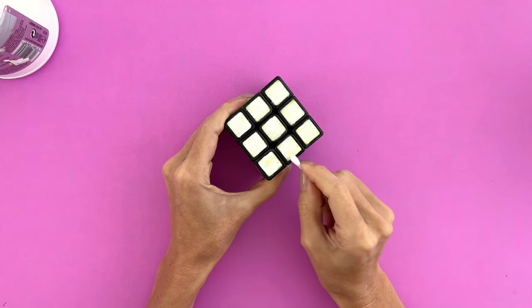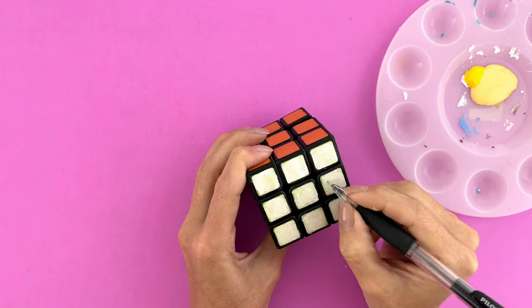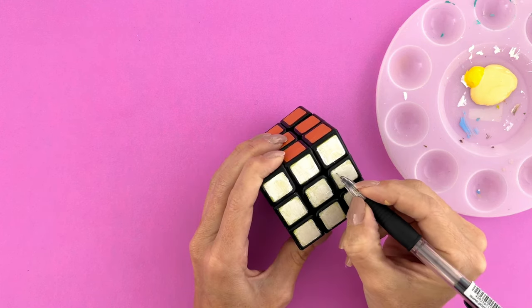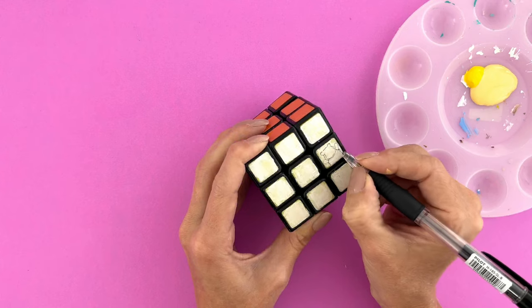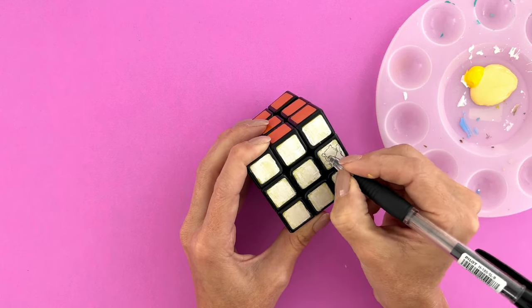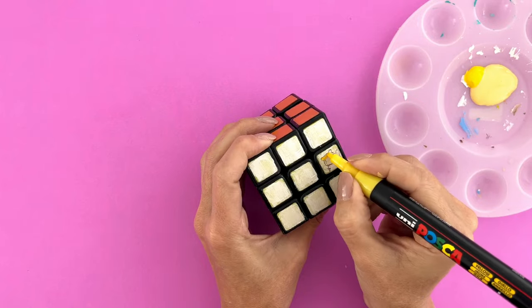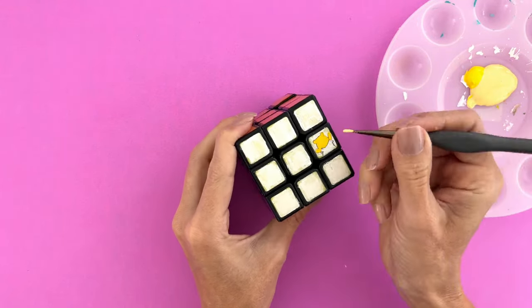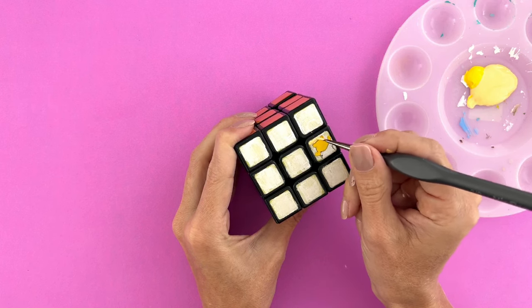Once the gesso was dried, I went in with my mechanical pencil to draw a few of the ideas for yellow that I had come up with. You know what, actually coming up with the ideas that I wanted to paint on the cube was the hardest part for me. The yellow was easier because I knew I wanted Pooh Bear there and someone on my Instagram stories quickly suggested to do a little bumblebee. So at least I had two squares for the yellow side.